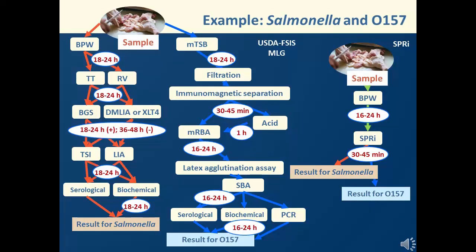An ideal alternative is for the sample to be screened using a rapid and multiplex technique, such as SPRI. It most likely will need to be enriched non-selectively before the assay, but no additional culturing steps are needed, and one sample run can yield results for both Salmonella and E. coli. Therefore, the overall screening process can be shortened and simplified. In the next few slides, I will show you some of our work towards this goal.